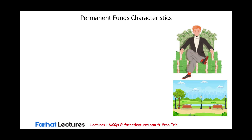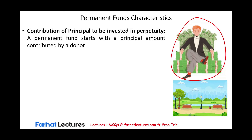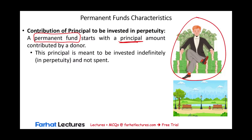Let's start by discussing the characteristics of permanent funds and how a permanent fund is established. Think of a person with money who wants to contribute a certain amount to this fund. We call it the permanent fund because this individual does not want the money — the principal amount — to be spent. However, the earnings, the income, the revenue generated from this money can be spent. For example, this money can be invested in a savings account.